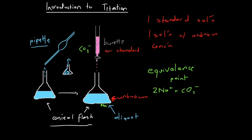We put the conical flask under what's called the burette. The burette allows us to measure exactly how much solution we are releasing through the tap at the bottom. We fill the burette with solution, record how full it is, then release some of the solution and mix it down into the flask until we reach the equivalence point. Once we reach the equivalence point, we check the volume of the burette again, and by working out the change in volume, we can figure out the amount of solution mixed. We call that amount the titer.